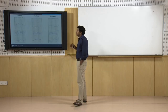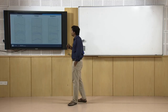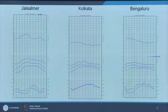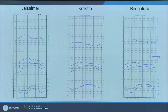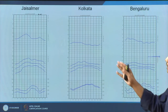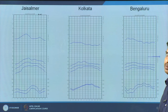These are typical climate summary charts, which are simply used for inferring the climatic pattern or the climatic characteristics in a given location. Let us consider three different locations: Jaisalmer, which represents a hot and dry climate; Kolkata, representing a warm and humid climate; and Bengaluru, representing a moderate climate.